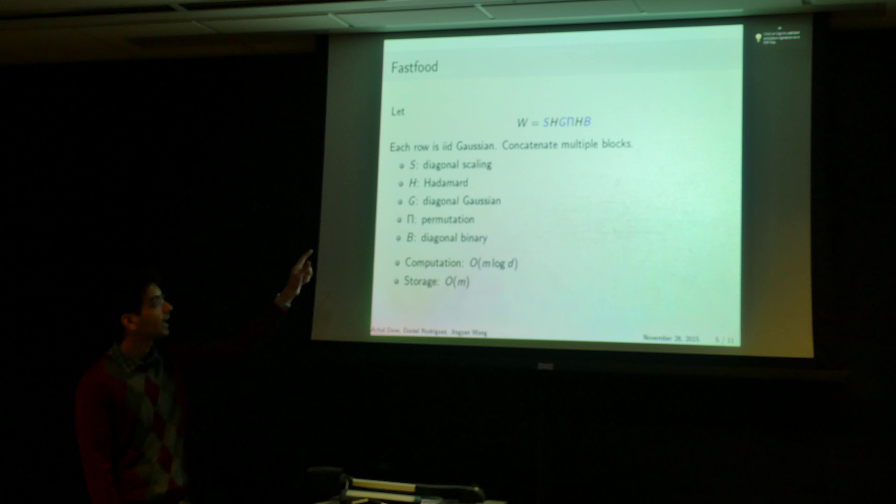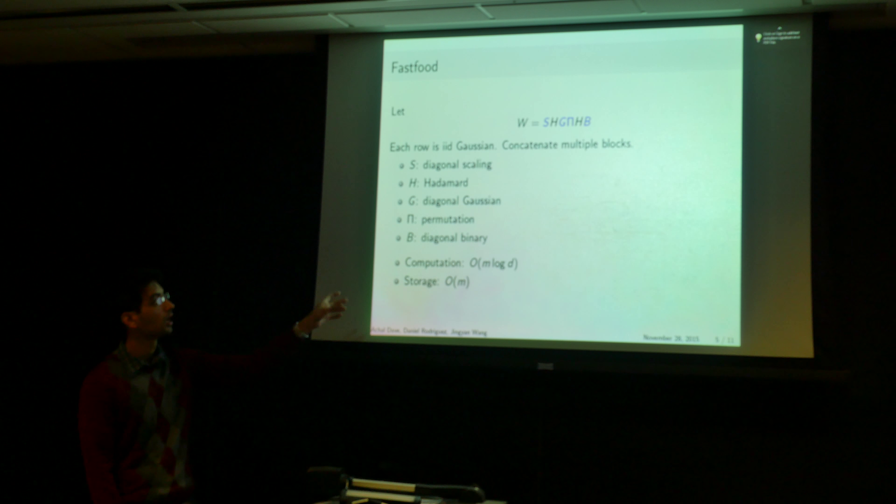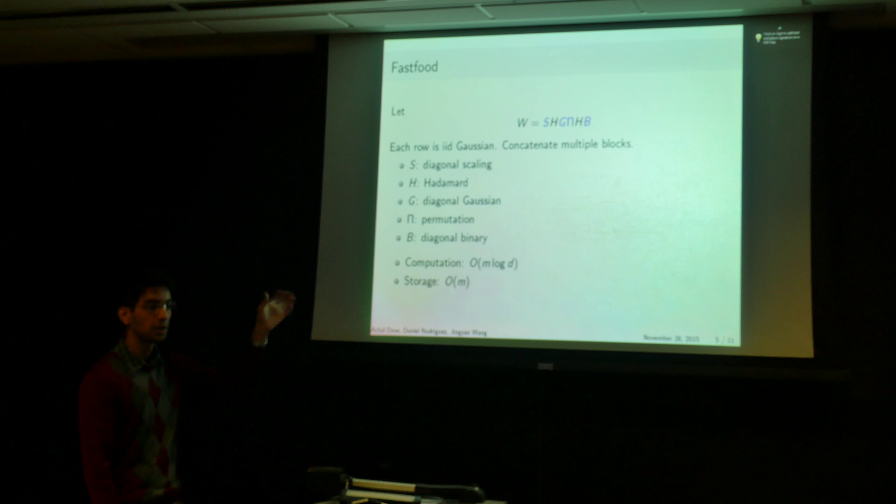And the fast food matrix is a concatenation of multiple blocks, where each block is this kind of matrix. The blocks are independent.